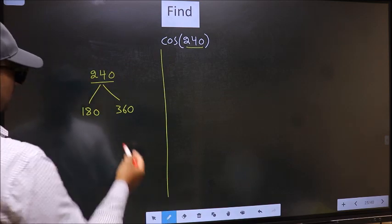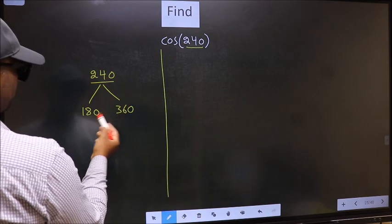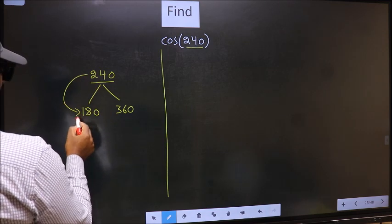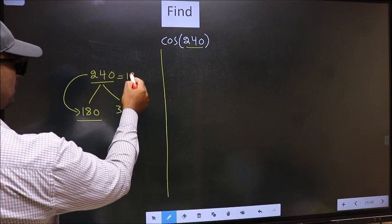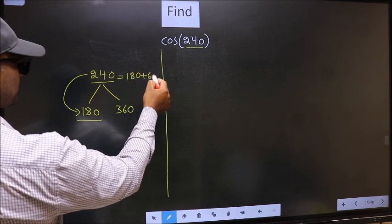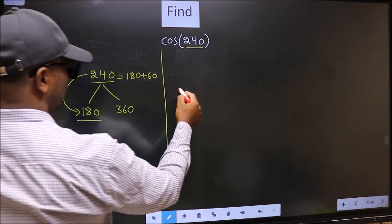Next, 240 is close to which number? This is close to 180. So in place of this, now we should write 180 plus 60. So this will become cos.